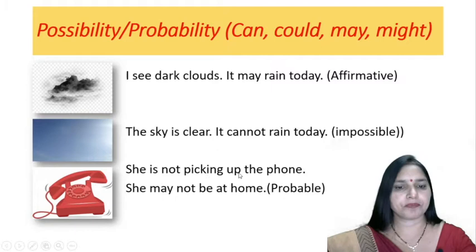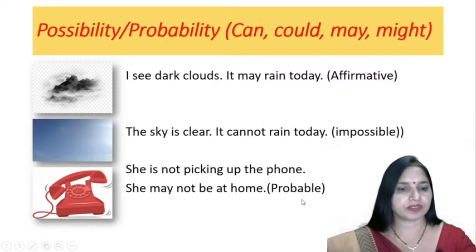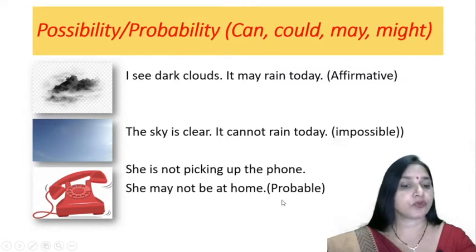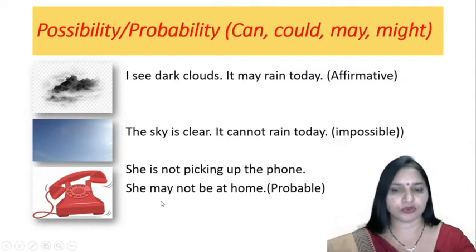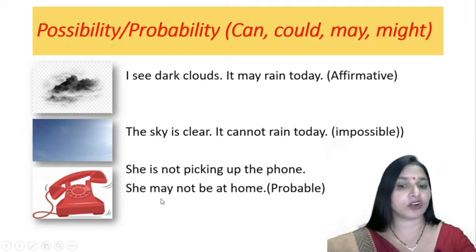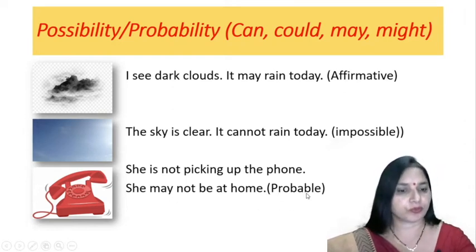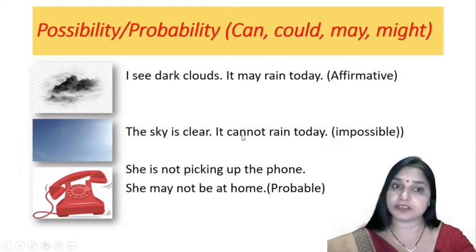'She is not picking up the phone. She may not be at home.' This is probability. When we use 'may not,' that shows probability — meaning there are other options also. She may be sleeping; she may not be at home — anything is possible. So for probability we use 'may not,' but for impossibility we use 'cannot.'